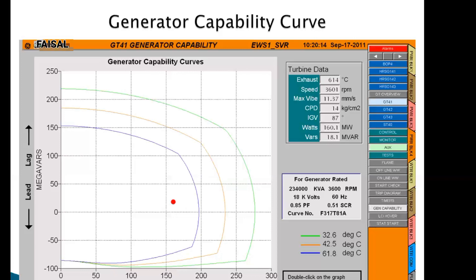In that case we have to receive that reactive load, so we will run our generator in under excitation mode and the dot will come below this zero line in the negative side. But on the negative side we cannot receive much megawatt. The curve is very near, but on the positive side you can take up to here, 100 megawatts.